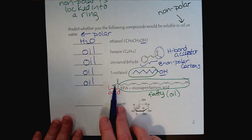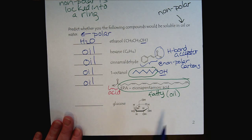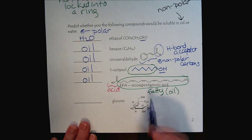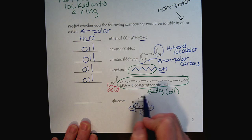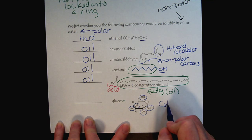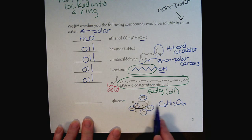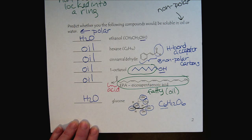Basically, one polar group can offset only a small number of carbons. Our last example is glucose, represented here with all of these alcohol hydroxy groups that are H-bond donors and acceptors. The formula is C6H12O6 — six carbons, but many polar groups and even an ether group. So glucose is definitely soluble in water.